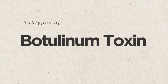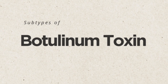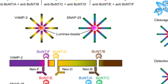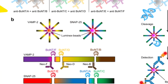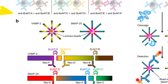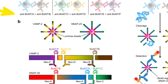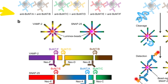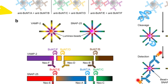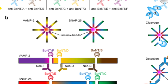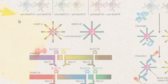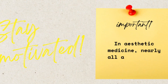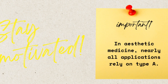Subtypes of botulinum toxin: seven antigenically distinct subtypes have been identified — A, B, C, D, E, F, and G. The human nervous system is susceptible to types A, B, E, F, and G. Types C and D do not affect humans. Among these, type A is by far the most widely used in clinical practice, with type B occasionally used in certain situations. In aesthetic medicine, nearly all applications rely on type A.